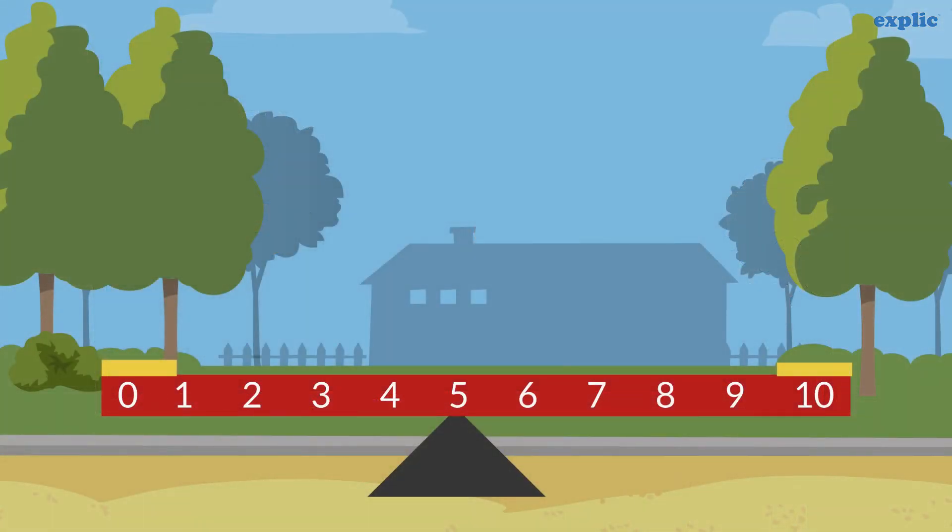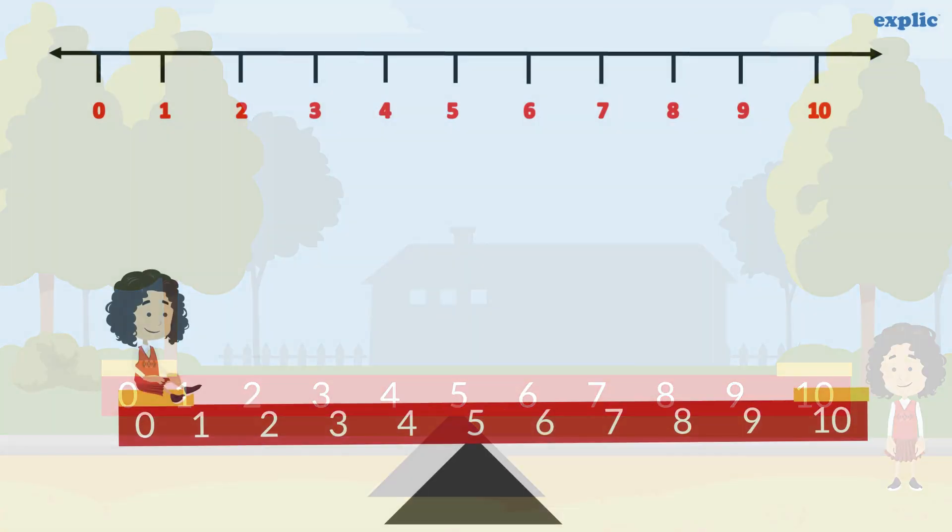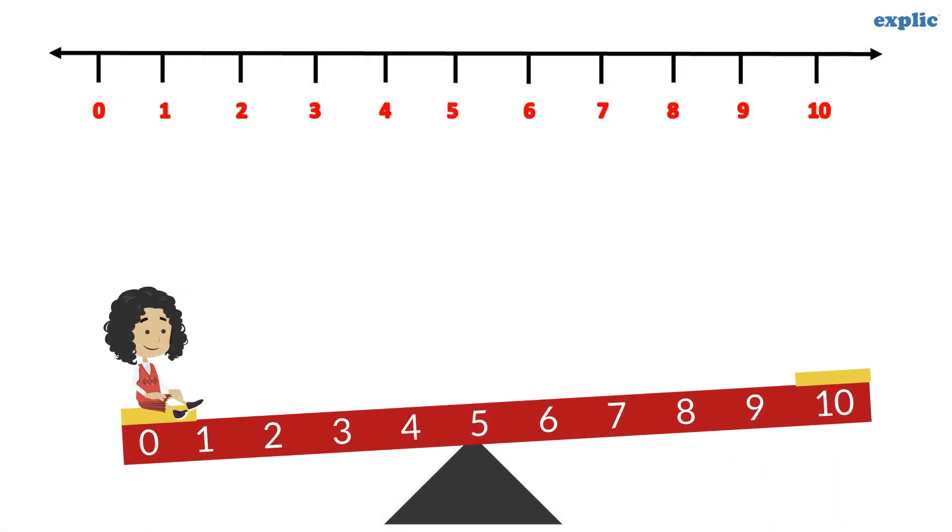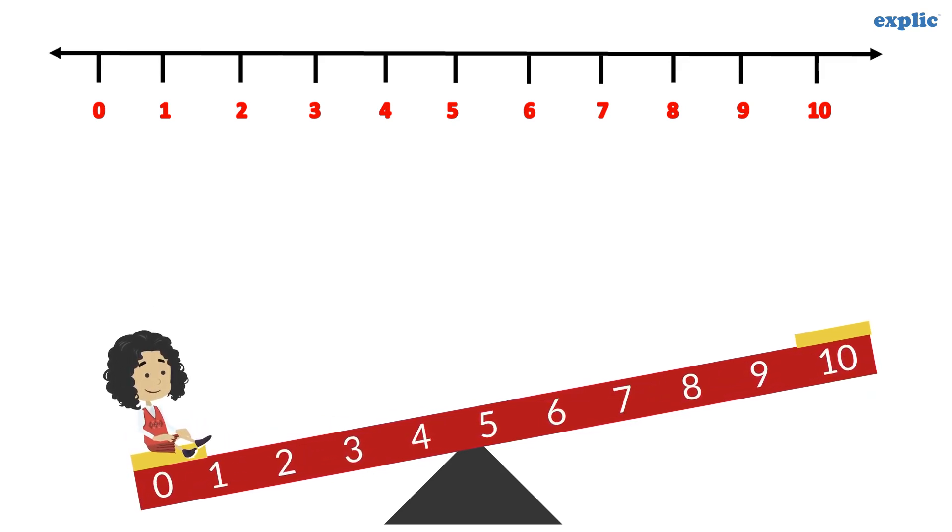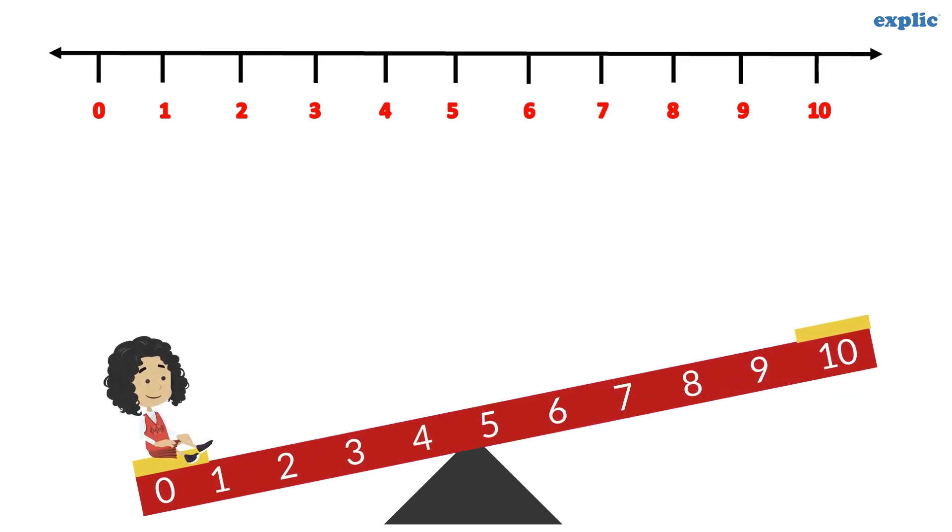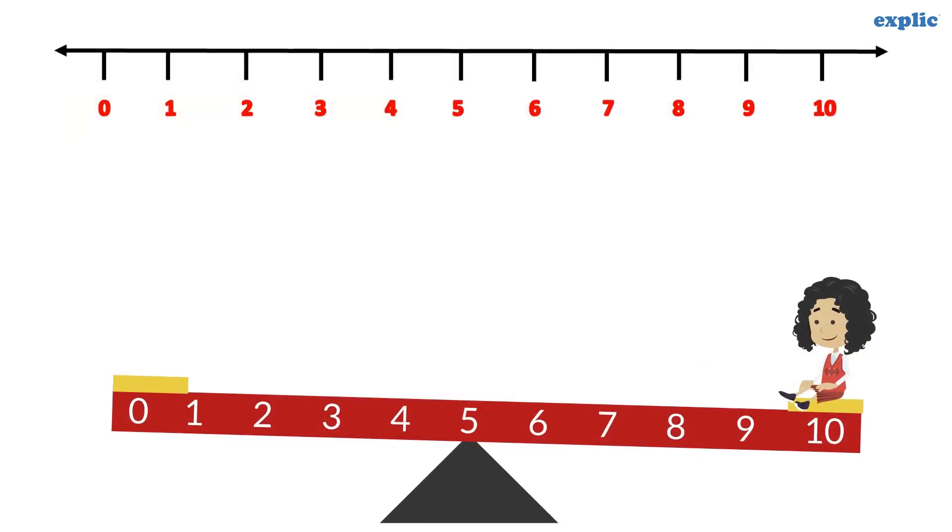To understand rounding off, consider a seesaw as a number line marked from 0 to 10. 5 is in the middle of the seesaw. Suppose Sarah wants to play on the seesaw. If she is sitting on the left side, which is marked from 0 to less than 5, which end of the seesaw will go down? 0 end, right. Hence, 0 to less than 5 can be rounded off to 0, which is also called rounding down.